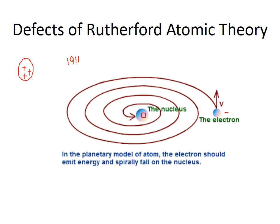Where does the problem arise? The problem arises with the movement of the electron. As electrons are charged particles, so according to the electromagnetic theory, they should emit electromagnetic radiations. As they are moving and revolving around the nucleus, they are releasing energy in the form of electromagnetic radiations.